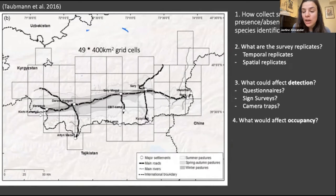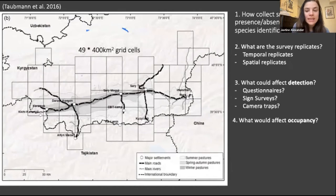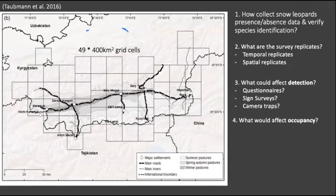So what could affect occupancy? This may not vary as much depending on what method you use to collect data. Any ideas on what might affect snow leopard occupancy in this landscape? Kustub, if you're there, maybe you can add your knowledge of the area.